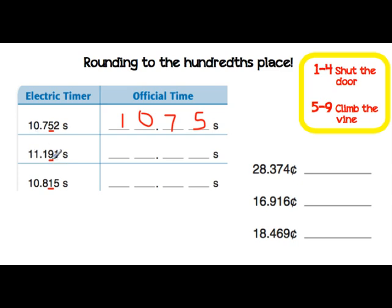Looking at the next one, the number to the right of the hundredths place is a 1. That fits in the 1 through 4 rule, so we're going to shut the door and leave that 9 as it is. So this answer is going to be 11 and 91 hundredths of a second.